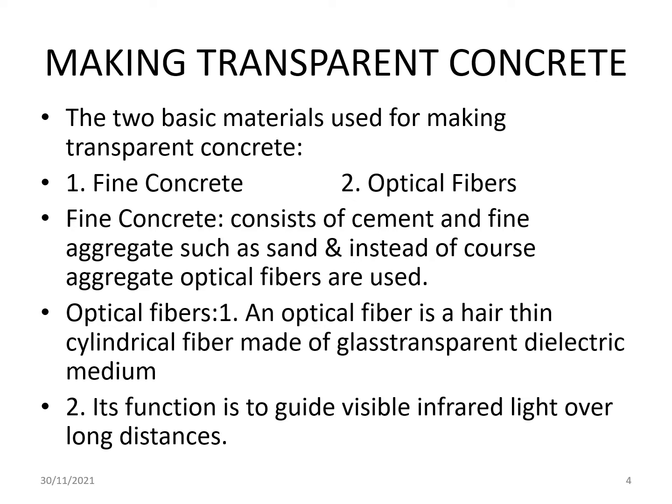Making transparent concrete: The two basic materials used are first, fine concrete, and second, optical fiber. Fine concrete consists of cement and fine aggregates such as sand, and instead of coarse aggregate, optical fibers are used. An optical fiber is a hair-thin cylindrical fiber made of glass, a transparent dielectric medium, and its function is to guide visible and infrared light over long distances.